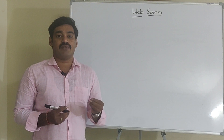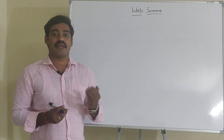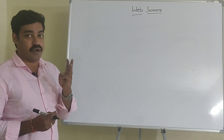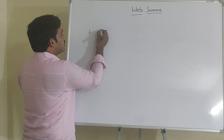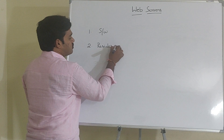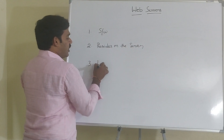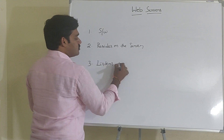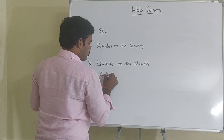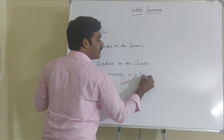What is a web server? A web server is a piece of software that resides on the server and listens to the client continuously in a 24x7 format. If you observe carefully, the definition has three points. First one is it is a software. Second one is it resides on the server. Third one is it listens to the client continuously in a 24x7 format.